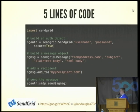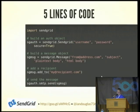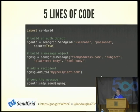Implementing it's five lines of code. You do an import, you build an authentication object, then you build a message object where you give the from address, a subject, a plain text, an HTML body. You add a recipient or group of recipients, and then you send the message.